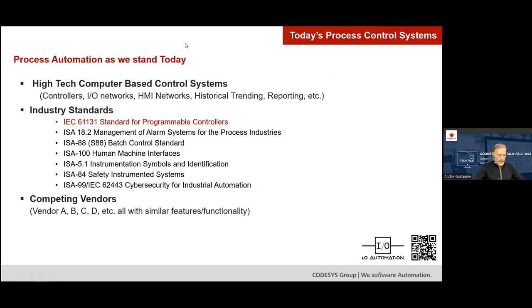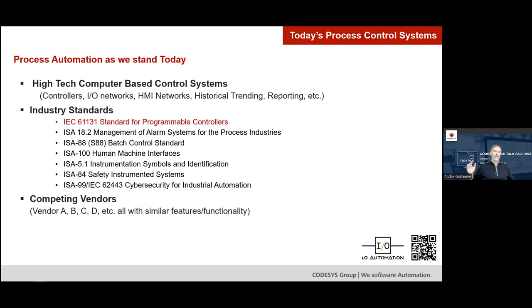I want to start by talking about where we stand today in terms of process automation and process control systems. The first PLC was invented in 1968 — a Modicon PLC. Fast forward to today: our computer systems and process control systems are very high tech. We have powerful controllers capable of controlling thousands of IO points, very fast and intelligent IO networks, configurable IO cards with universal IO and electronic fuse protection, HMI networks that span an entire plant, data historians, powerful reporting, and database connectivity with SCADAs. Technologically, process control systems are very advanced.